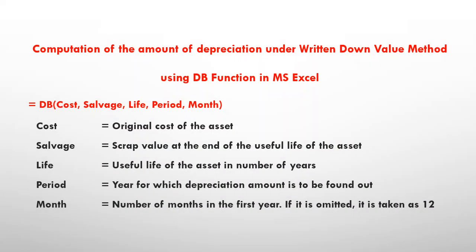We also discussed computation of depreciation under the WDV method using the DB function in MS Excel: =DB(cost, salvage, life, period, month). Cost is the original cost of the asset, salvage is the scrap value at the end of useful life, life is the useful life in years, period is the year for which depreciation is to be found, and month is the number of months in the first year — if omitted, it defaults to 12.